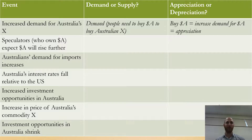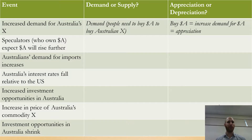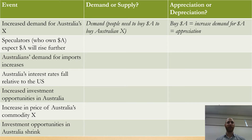Let's go through the second one while we are here, and then you can do the rest yourselves. Speculators who own Australian dollars already expect the Australian dollar will go up even more. If they expect the Australian dollar will go up, they will want to buy more Australian dollars. That will be an increase in demand. Buying Australian dollars — increased demand for Australian dollars — will lead to an appreciation in the currency. From here, complete the rest of the examples, and we will go through them in the next video.